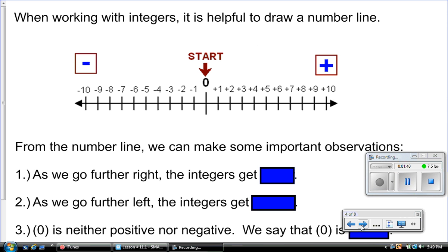When working with integers, it is helpful to draw a number line, such as the one right here. You'll notice that 0 is right in the middle, and to the left we have all of the negative integers, and to the right we have all of the positive integers.